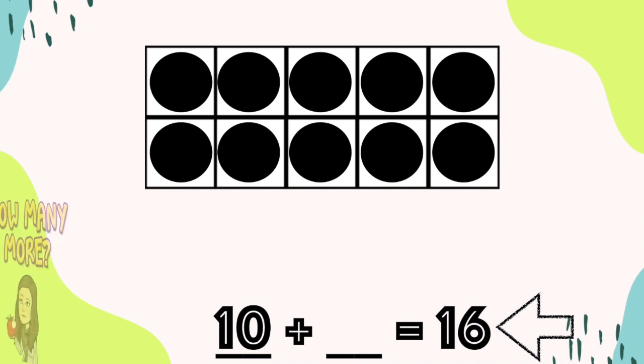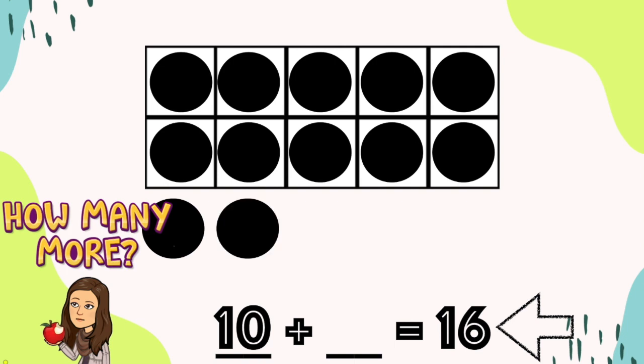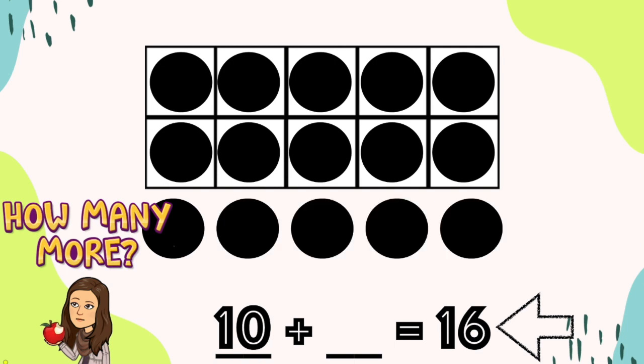Now, we need to figure out how many more to get to 16. How do you think we can figure out how many more? You're right! We can count on from 10. Let's count: 11, 12, 13, 14, 15, 16.